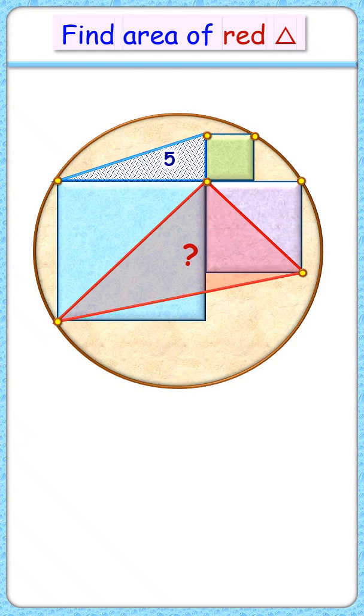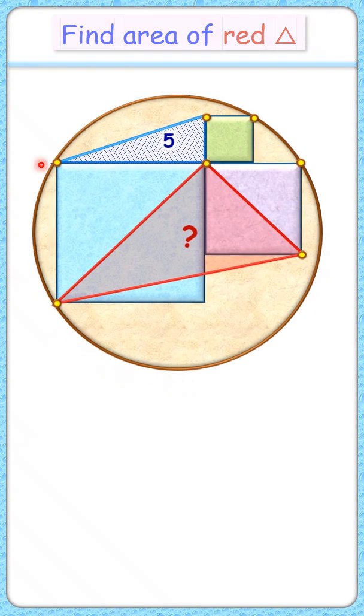This really amazing question: can you find the area of this red triangle where given are three squares inside a circle and area of this blue triangle is 5 cm square? Let's check the solution.